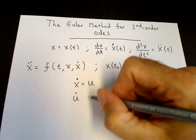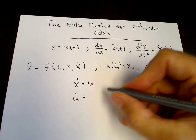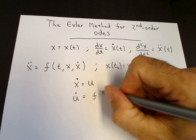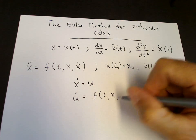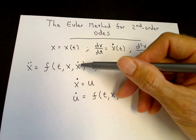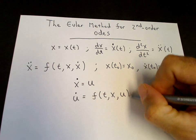Then the x double dot we can write as u dot, so we can write the second equation as u dot, and that's equal to x double dot, so the right-hand side is f of t and x. And now we replace x dot by the new variable u.